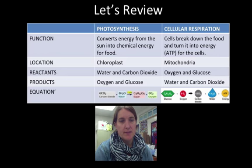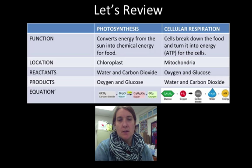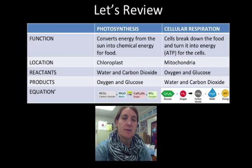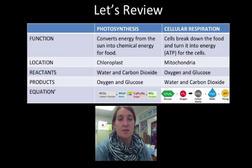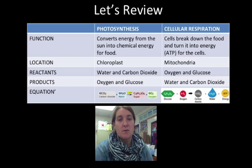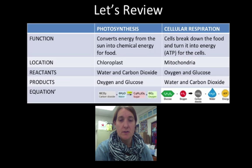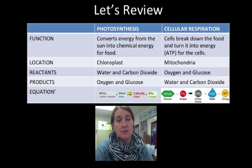So let's make sense of what they said. Plants are able to capture the energy from the sun and convert that into food. The food is glucose, and they do that in the chloroplast. They do that using water and carbon dioxide, and they're able to make oxygen and glucose. So the equation is: carbon dioxide plus water yields glucose plus oxygen.